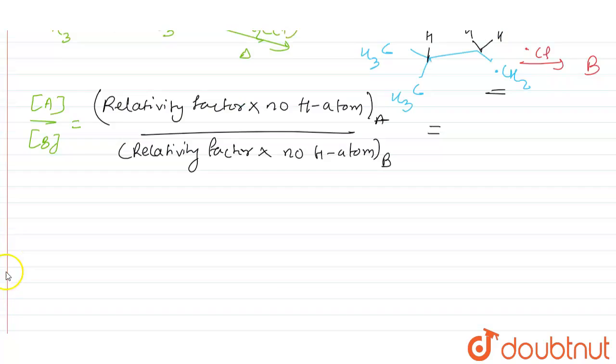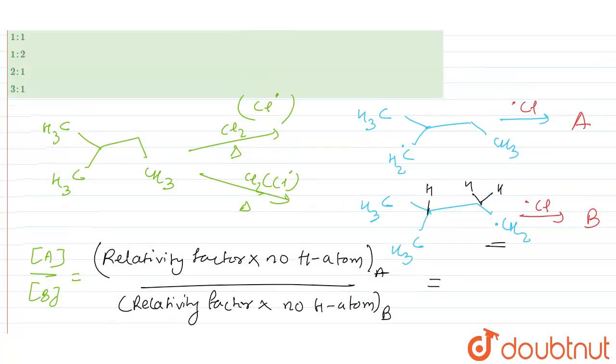So here in the A part, if you see, that is this radical, we have how many number of hydrogen atoms we had? Total three plus two, this one had hydrogen atom is lost, so initially we had six hydrogen atoms. So here, relativity factor for this is given as one in the question itself.